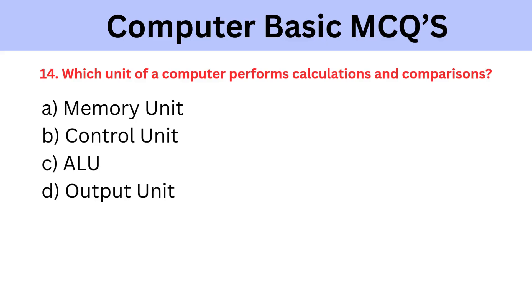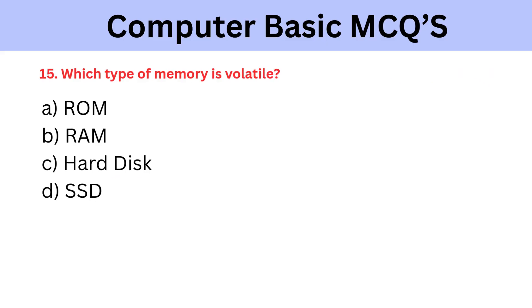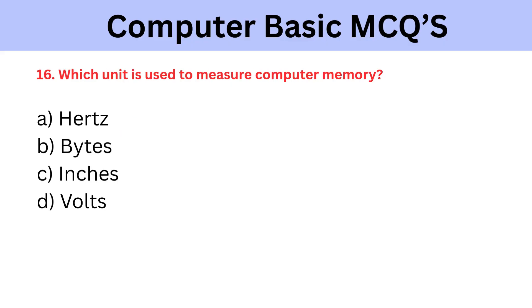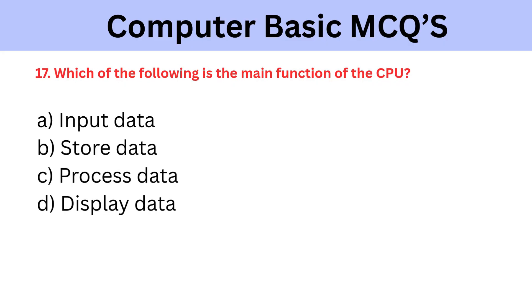Which unit of a computer performs calculations and comparisons? A) Memory Unit, B) Control Unit, C) ALU, D) Output Unit. The correct answer is ALU. Which type of memory is volatile? A) ROM, B) RAM, C) Hard Disk, D) SSD. The correct answer is RAM. Which unit is used to measure computer memory? A) Hertz, B) Bytes, C) Inches, D) Volts. The correct answer is Bytes.